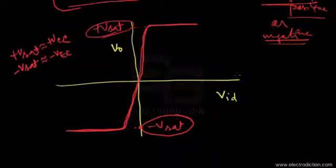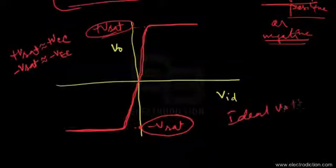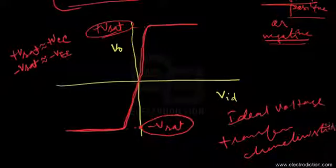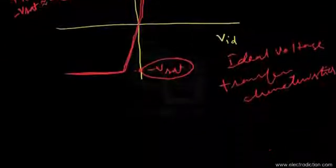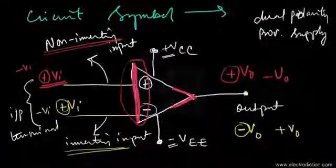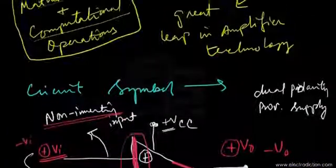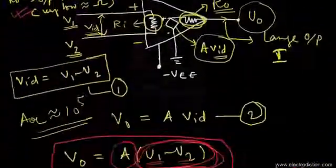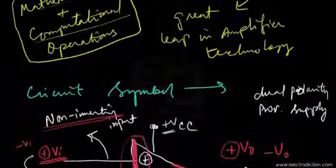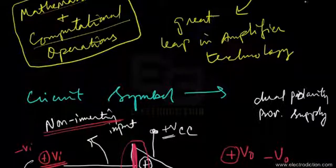This characteristic is known as the ideal voltage transfer characteristics of the op amp. Having covered these basics, we've come to the end of our discussion in this tutorial. Don't forget to watch our next tutorial on op amp basics. Thank you for now and goodbye.